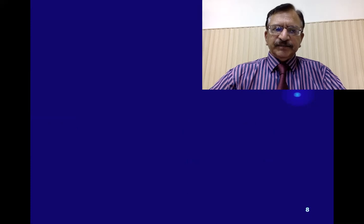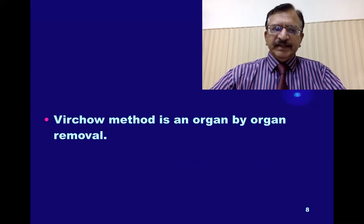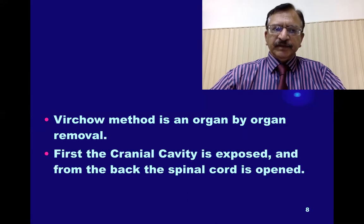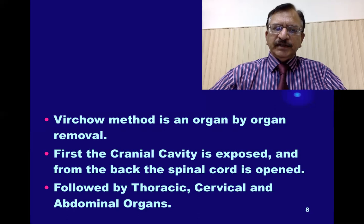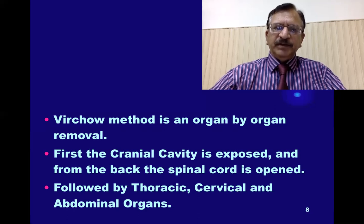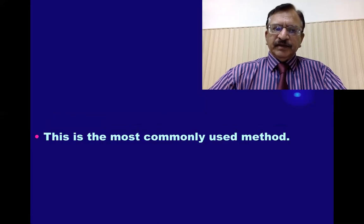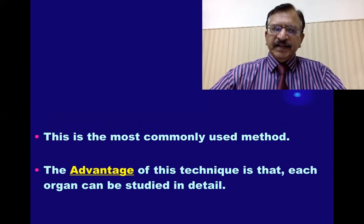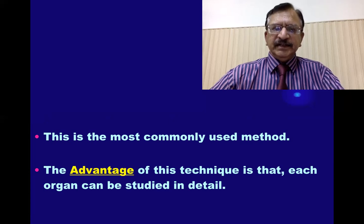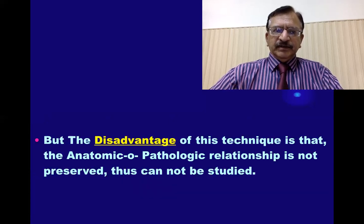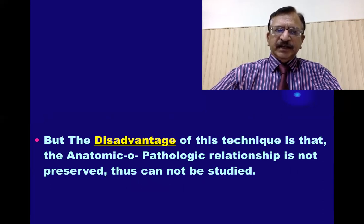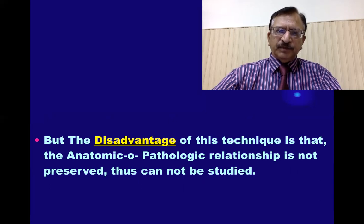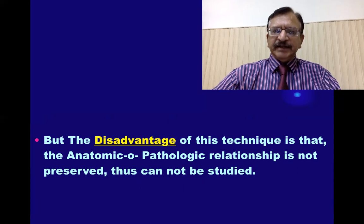Regarding Virchow's technique, Virchow's method is an organ by organ removal. First the cranial cavity is exposed, and from the back the spinal cord is exposed, which is followed by thoracic, cervical and abdominal organs. This is the most common method which is used. The advantage of this technique is that each organ can be studied in detail. But the disadvantage is that the anatomical pathological relationship is not preserved and thus cannot be studied.